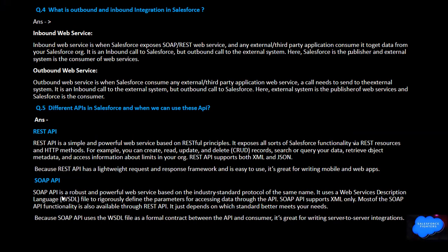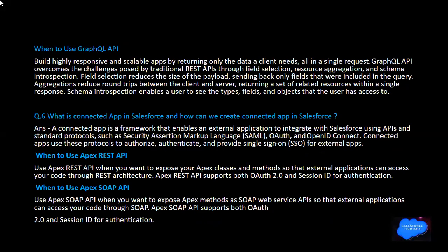SOAP API is a robust and powerful web service based on industry-standard protocols. It uses WSDL files to define the parameters for accessing data. SOAP API supports XML only. Most of the SOAP API functionality is also available through REST API — they are just different standard ways to meet your needs.